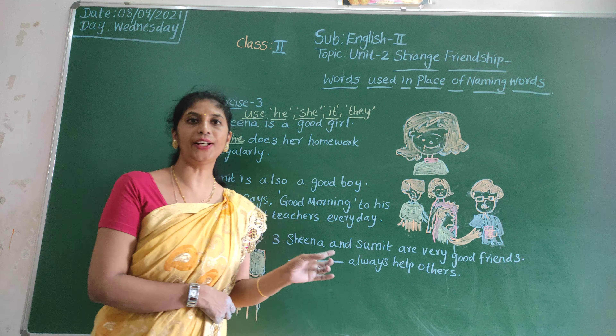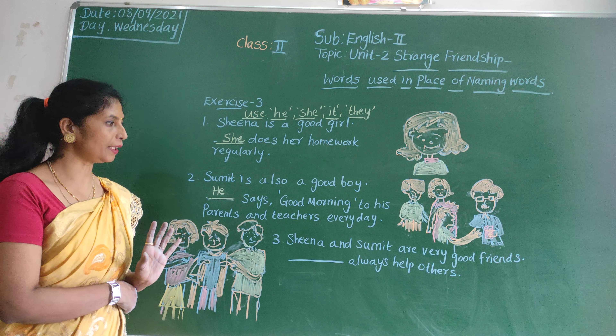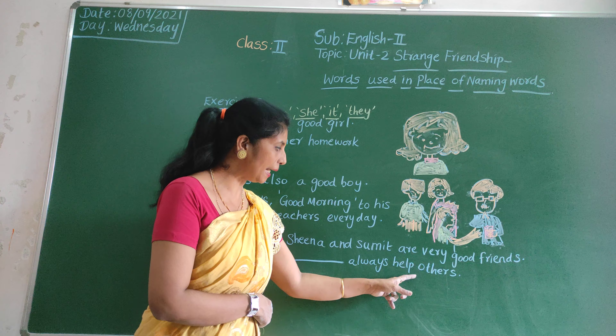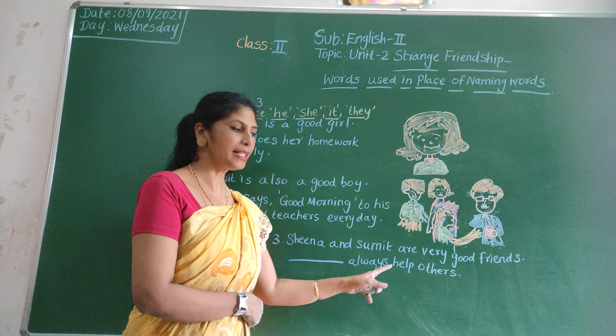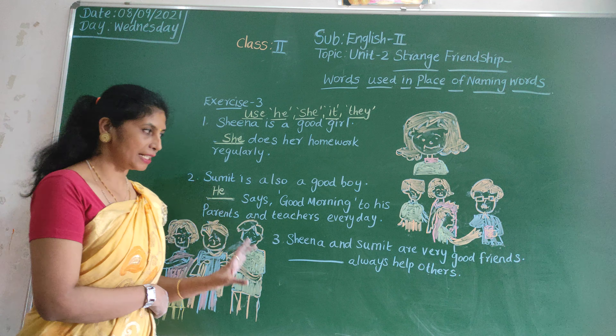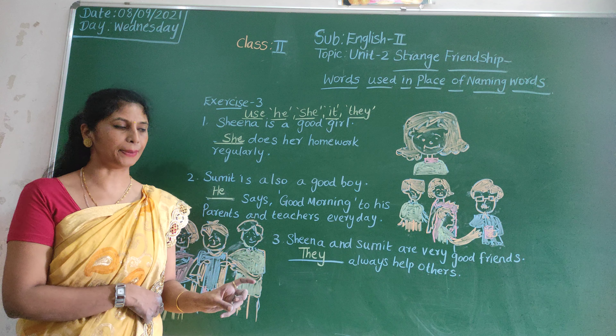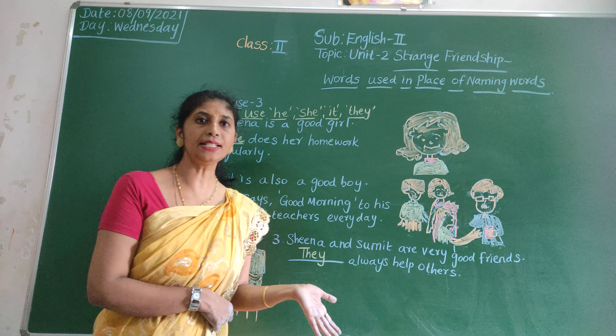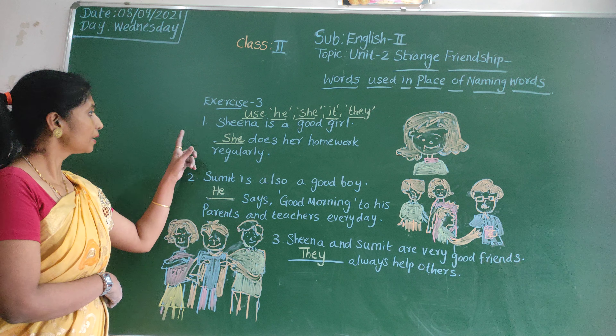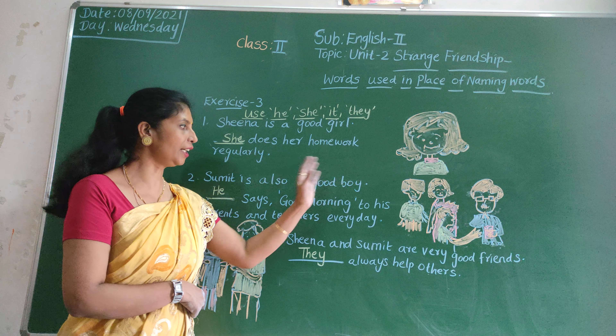Third one. Look at the third picture, children. Sheena and Sumit are very good friends. Dash always help others. Sheena and Sumit are two people, so we write 'they'. They always help others.